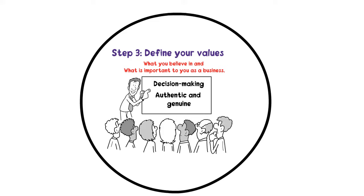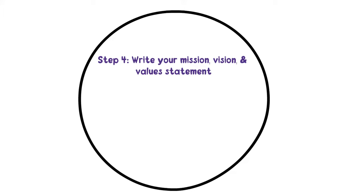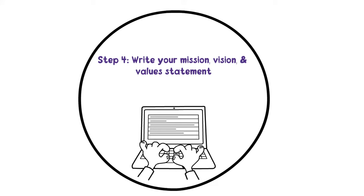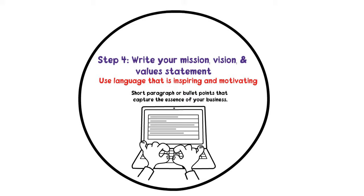Step 4: Write your mission, vision, and values statement. Now it's time to put your mission, vision, and values together in a clear and concise statement. This should be a short paragraph or bullet points that capture the essence of your business. Be sure to use language that is inspiring and motivating, and that reflects the culture and goals of your business.